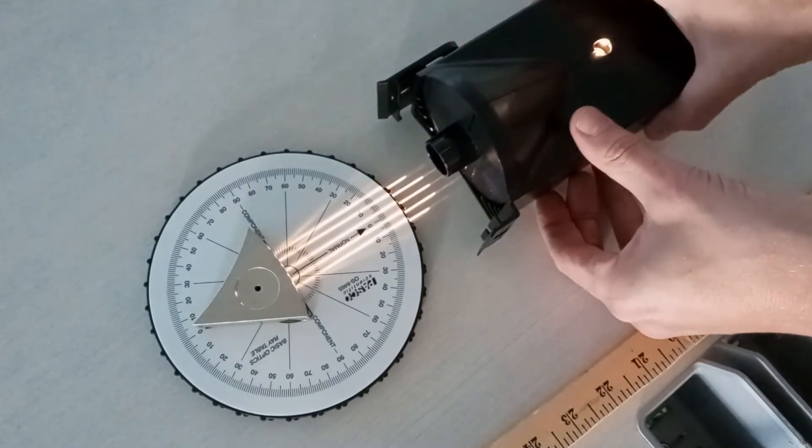Parallel light beams aimed at a concave or convex surface will converge at the focal point of that surface, which is half of the radius of curvature.